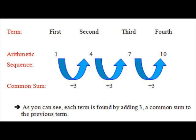As you can see, each term is found by adding 3, a common sum to the previous term.